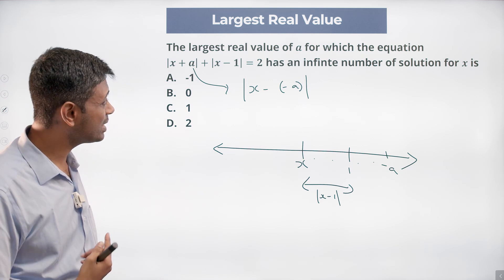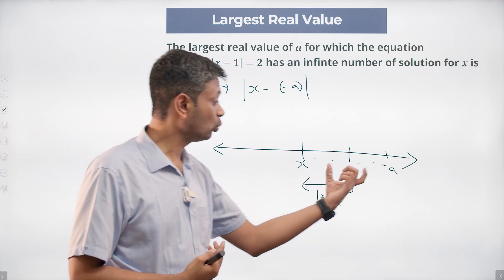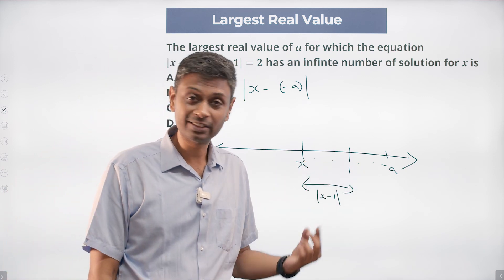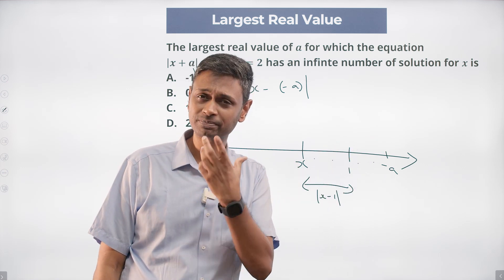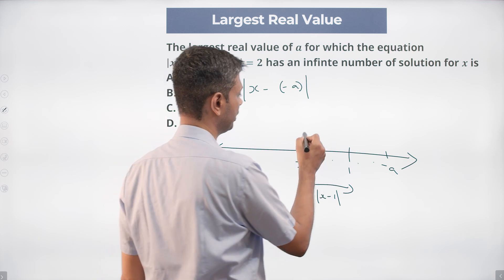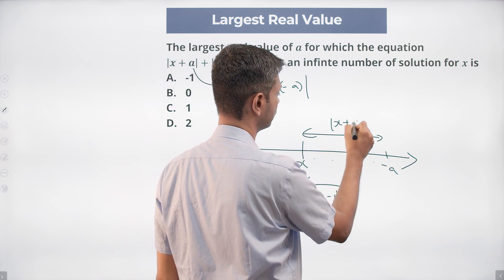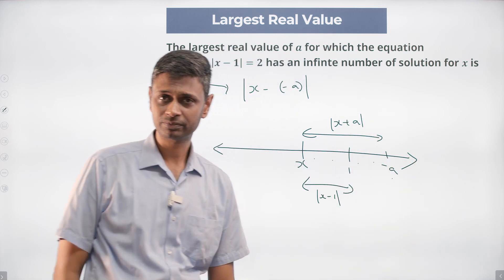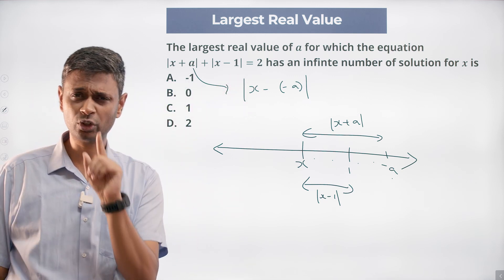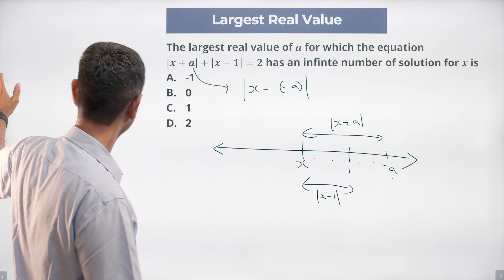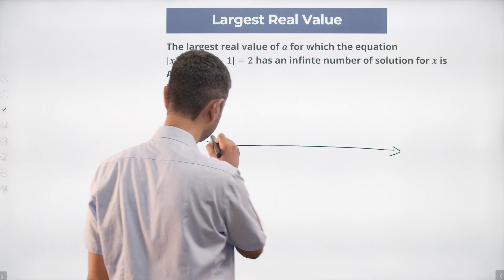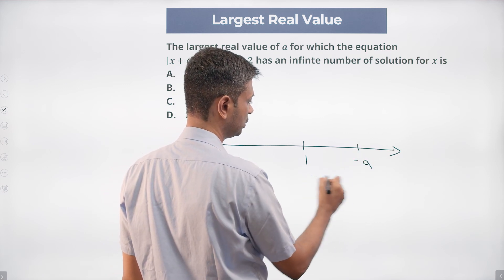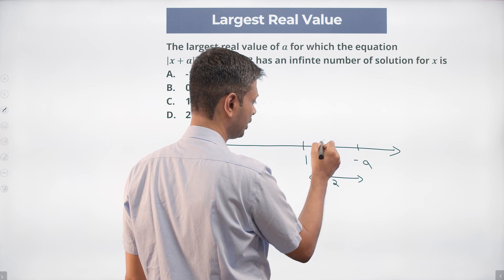When will it have infinite solutions? First of all, between 1 and -a the distance should be small — not 5, 15, or 20. Because if -a were 100, this distance itself is 99. It has infinite solutions only in a specific case. That gives us a beautiful gateway: x should sit between 1 and -a. We have 1 here and -a here, and this distance should be 2.